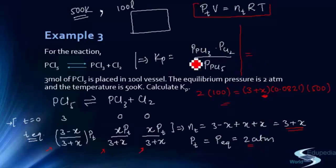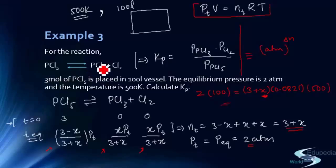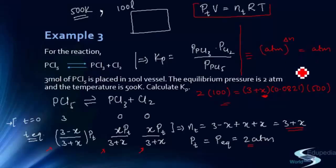The units of Kp are atm raised to the power of Δn, where Δn = stoichiometric coefficients of products minus stoichiometric coefficients of reactants. Here Δn = (1+1) − 1 = 1, so the units of Kp are atm.